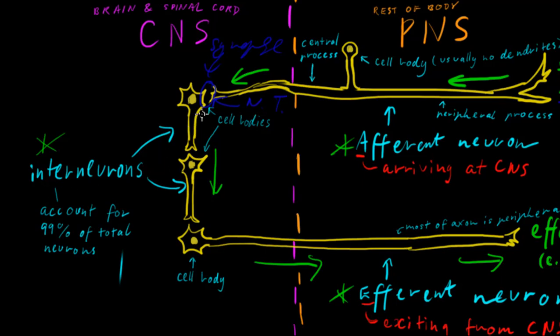And so the interneuron propagates that signal, and in this example, it's junctioning again, and once more, to get to the efferent neuron.